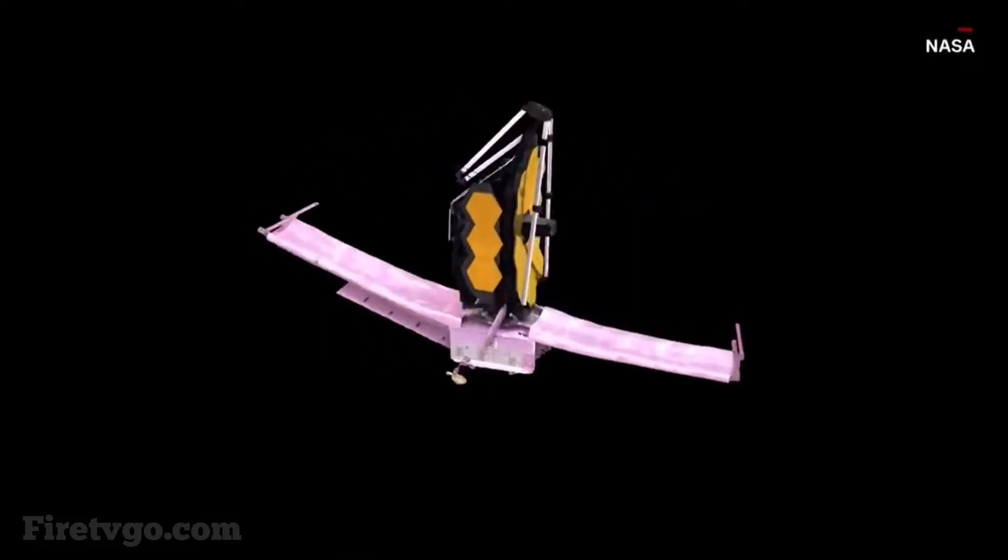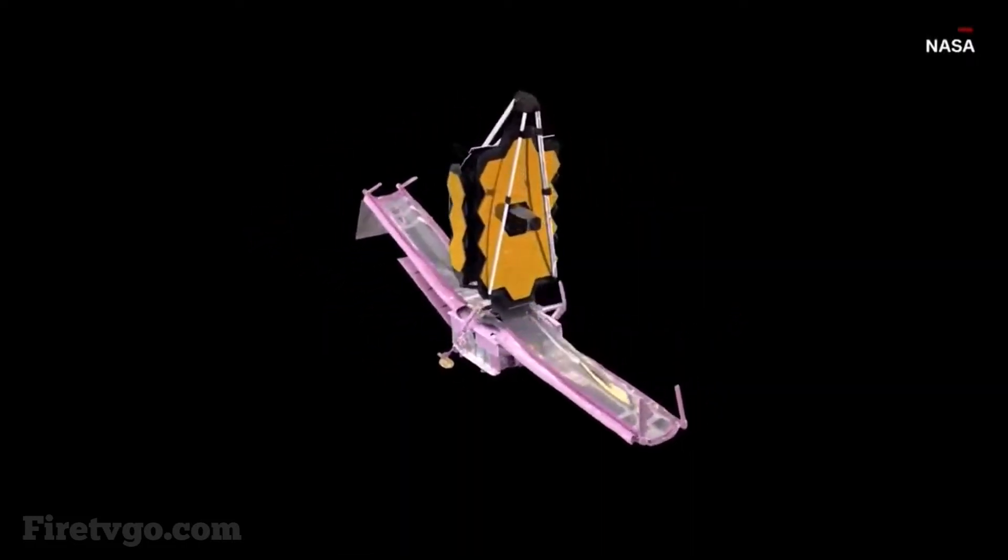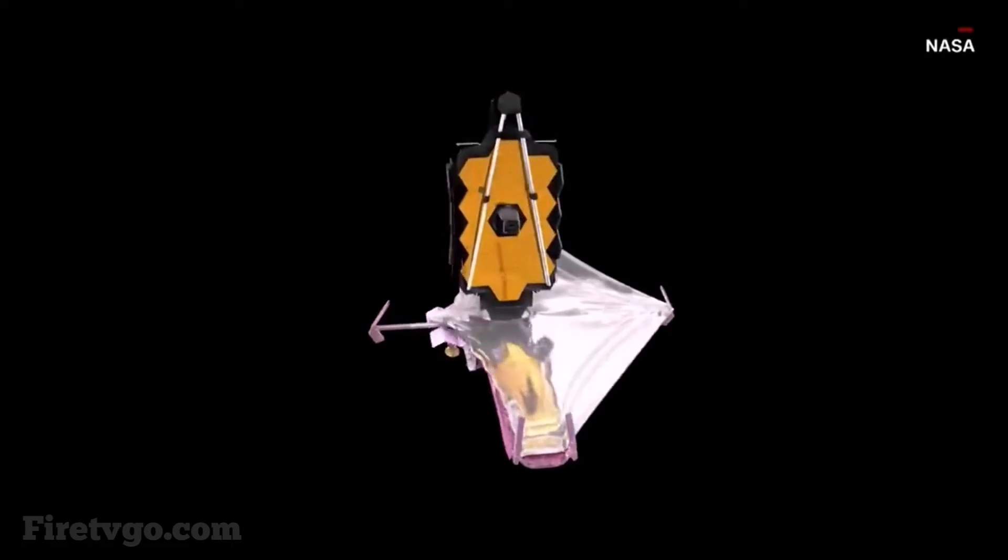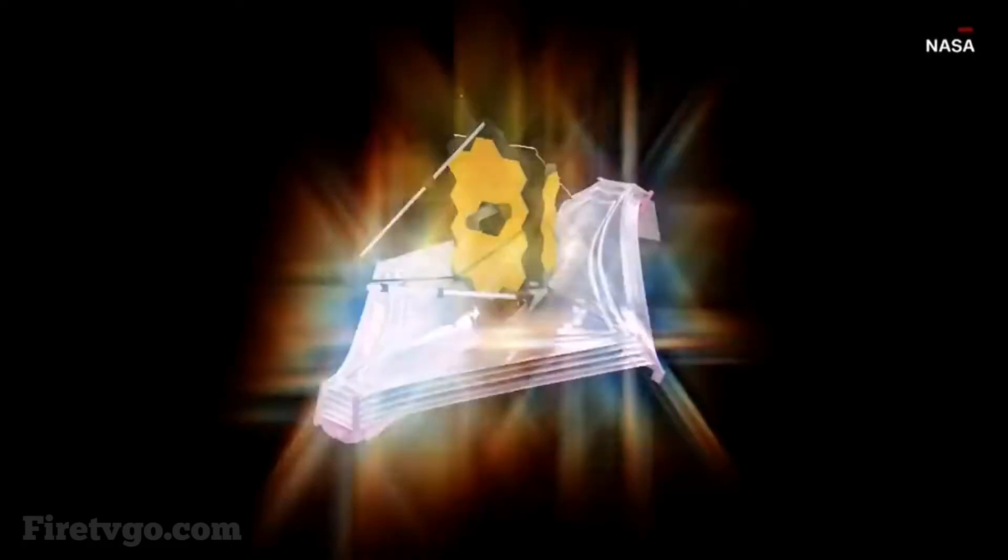After months of teasing, NASA finally revealed the very first full-color image taken by the James Webb Space Telescope. And man, oh man, was it worth the wait.